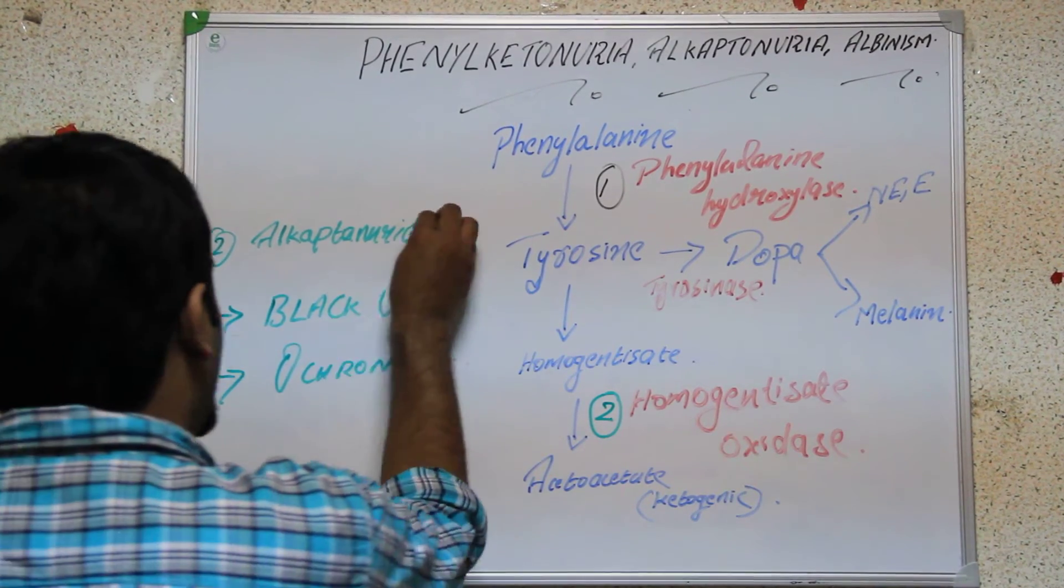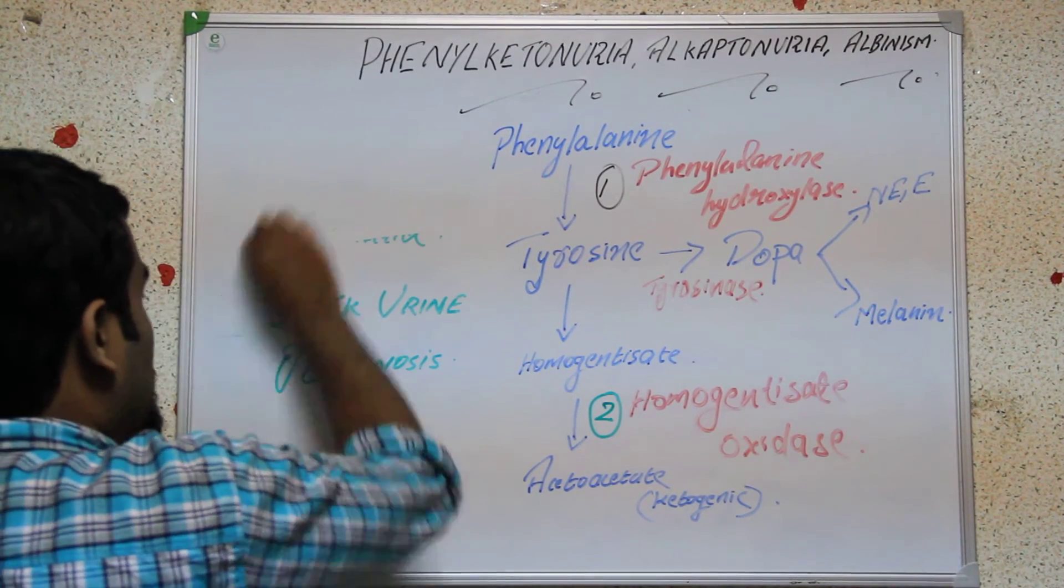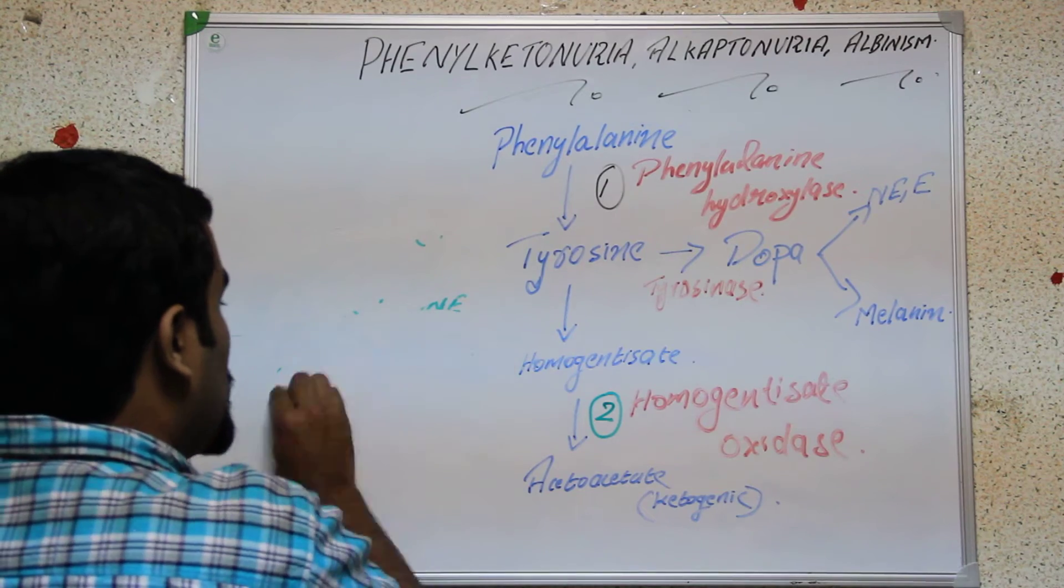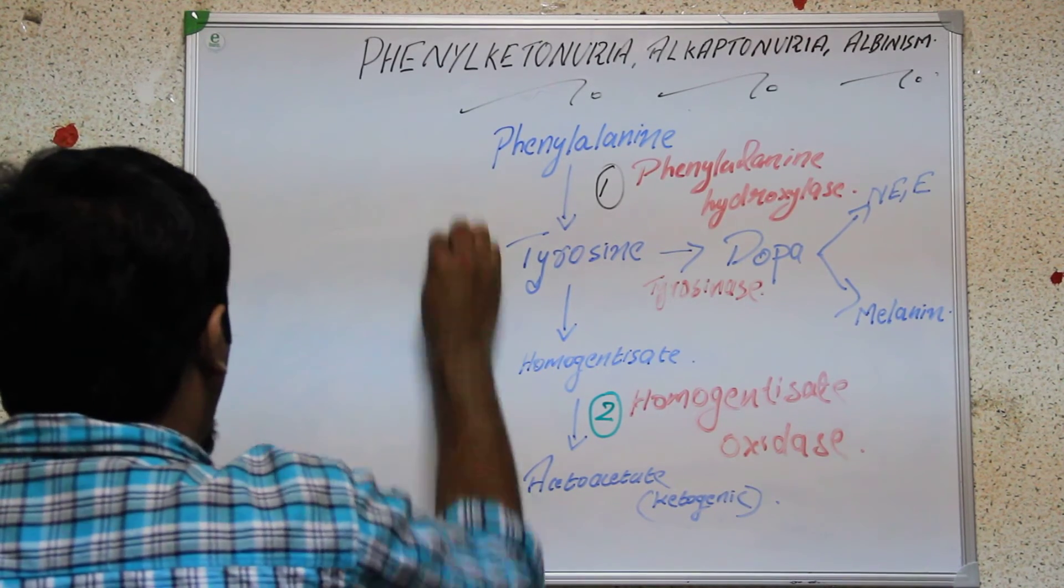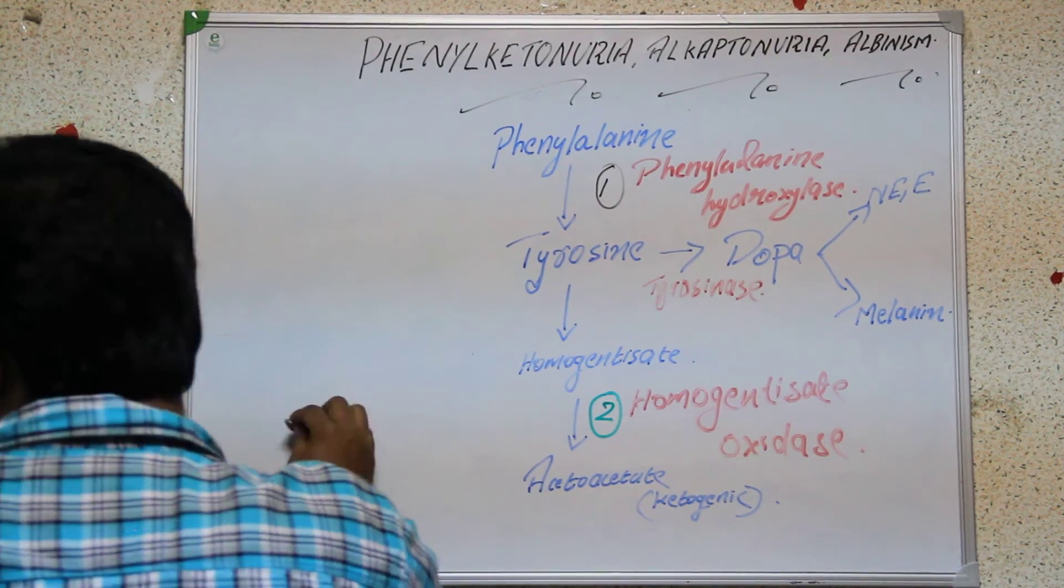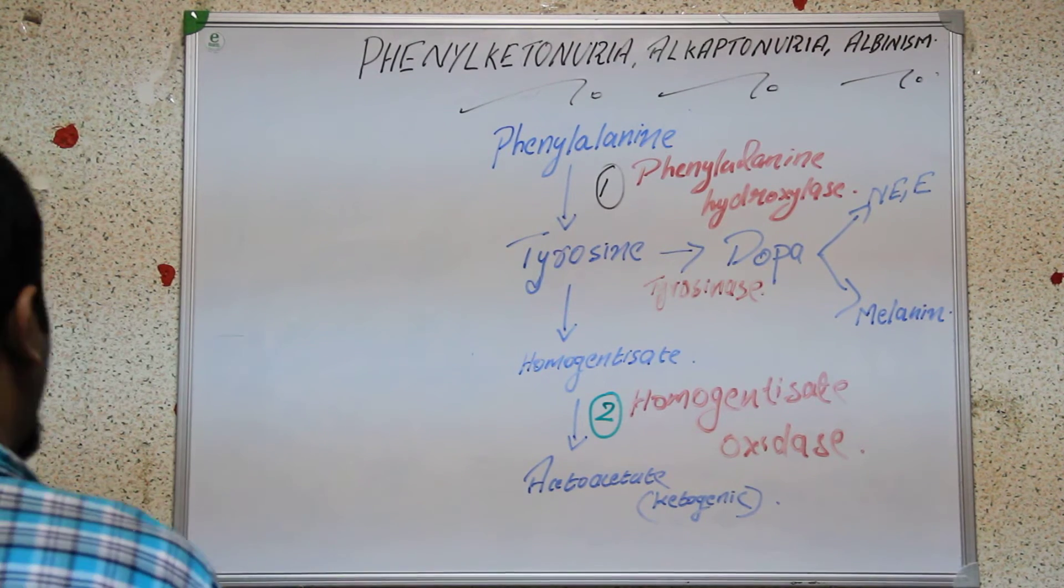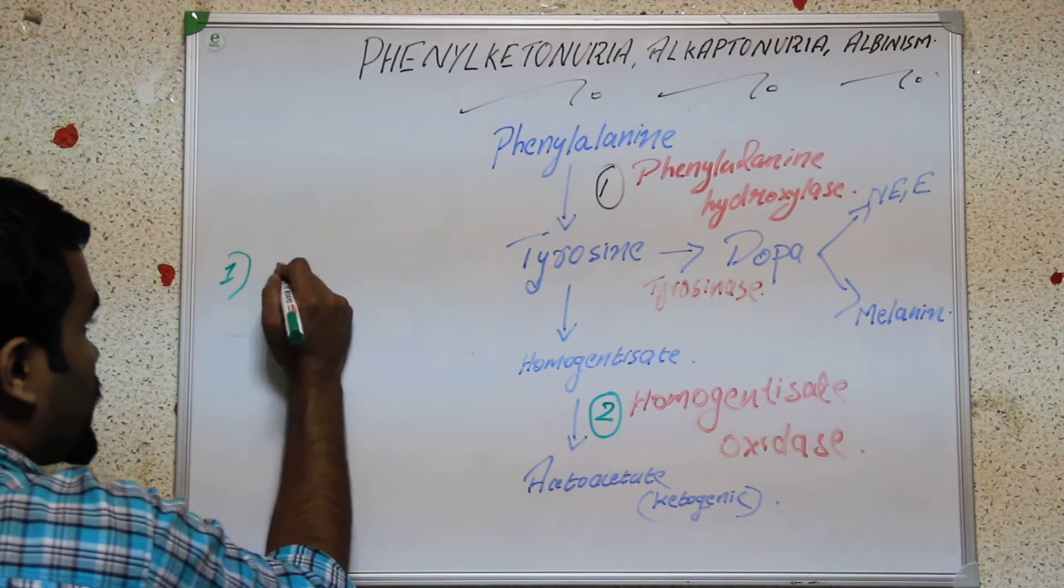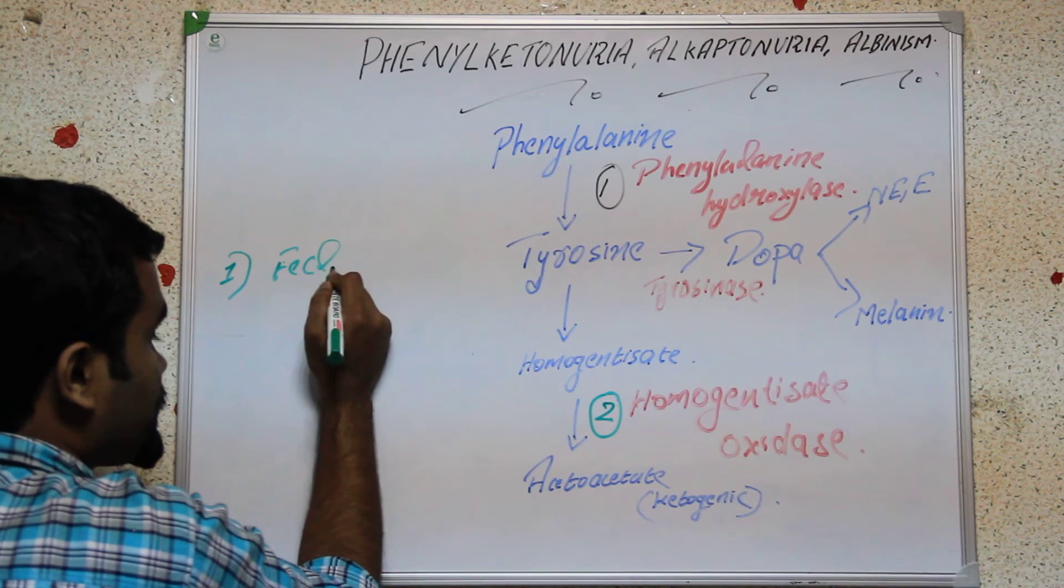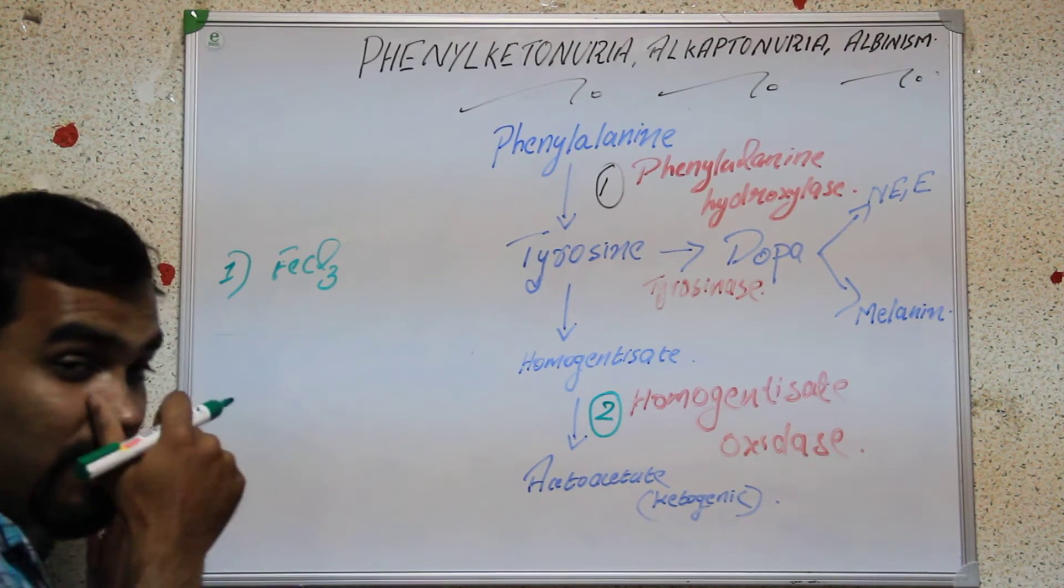This disease is also clinically manifested like this. How can we confirm a suspected person or diagnose this disease? We can do the same ferric chloride test here also. The ferric chloride test will get blue-green precipitate if it is positive.